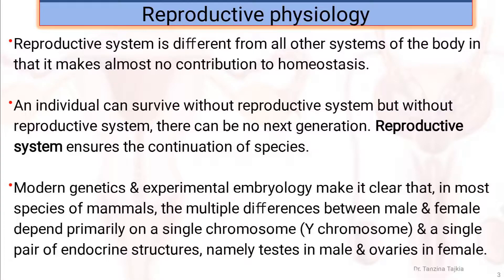Modern genetics and experimental embryology make it clear that in most species of mammals the multiple differences between male and female depend primarily on a single chromosome, which is the Y chromosome, and a single pair of endocrine structures, namely testes in the case of male and ovaries in the case of female.